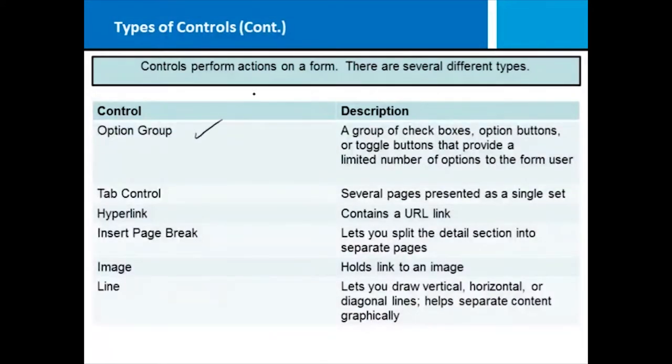We also have an option group which is simply a group of check boxes, option buttons, or toggle buttons that provide a limited number of options for the form user. We have tab controls and this is when you have several pages that appear as a single set. Hyperlinks are exactly that—they contain a URL to somewhere. We can insert page breaks so you can separate out the pages into something more readable, more organized. You can use an image and that's going to hold a link to an actual image. And if you want to make it pretty, we do have a line. A line allows you to draw vertical, horizontal, or diagonal lines. So sometimes when you have forms, it's nice to simply separate data so visually it's easier to navigate.